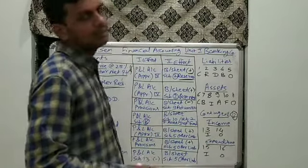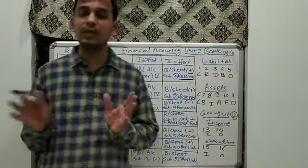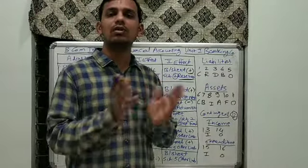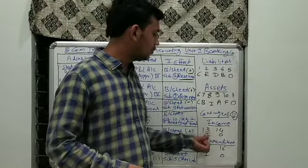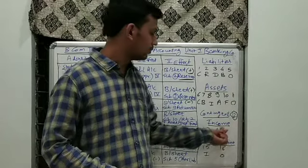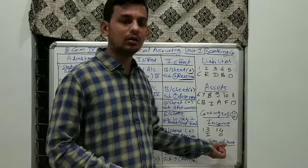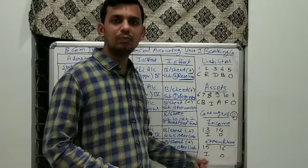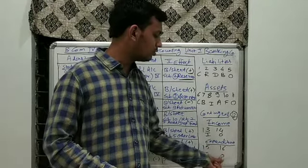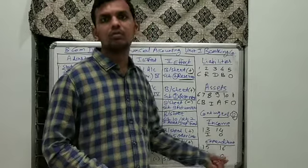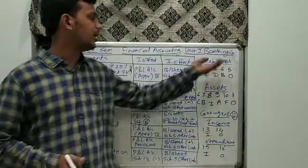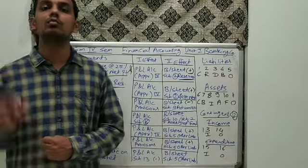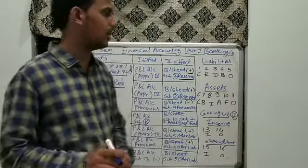For the P&L account schedules, the pattern is simple — IO, IO: Interest and Others, Interest and Others. For income: Schedule 13 — Interest Received, Schedule 14 — Other Income. For expenditure: Schedule 15 — Interest Paid, Schedule 16 — Other Operating Expenses. We can remember all the names and numbers in this simple manner.